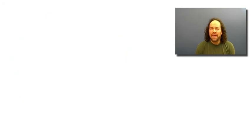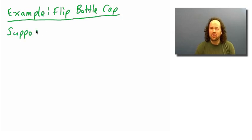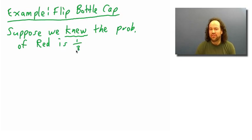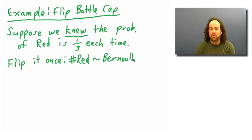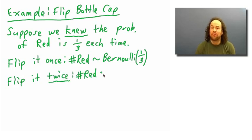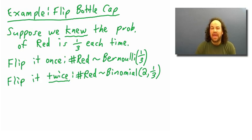Or if we imagine flipping bottle caps like we did last time — suppose the probability of getting red on each bottle cap was a third. If we flip one bottle cap and count the number of reds, that would be the Bernoulli(1/3). Or if we flip the bottle cap twice and count the number of reds, that would be the binomial(2, 1/3), and we can work out the probabilities for that.